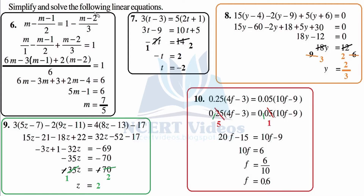Simplify and solve the following linear equations. This exercise is in continuation with a previous interaction on exercise 2.5, Chapter 2, Maths Class 8: Linear Equations in One Variable. Now we would solve question number 6: m minus (m minus 1) over 2 equals 1 minus (m minus 2) over 3.